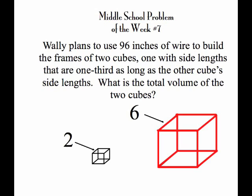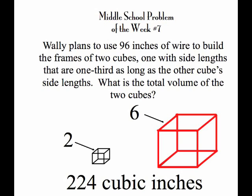We all know that to find the volume of a cube it's length times width times height, but since they're cubes it's all the same. 2 to the third for the small one, 6 to the third for the large one, so it's 2 cubed plus 6 cubed, or 8 plus 216, which is 224 cubic inches, which is the total volume of the two cubes and the answer to this week's problem of the week.